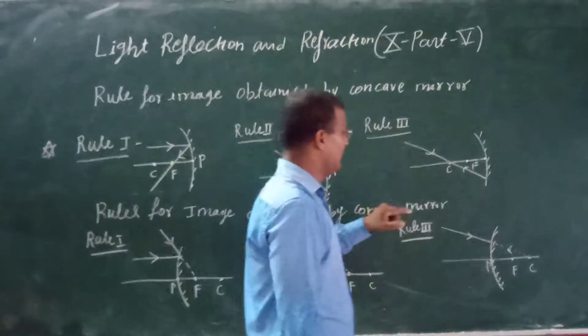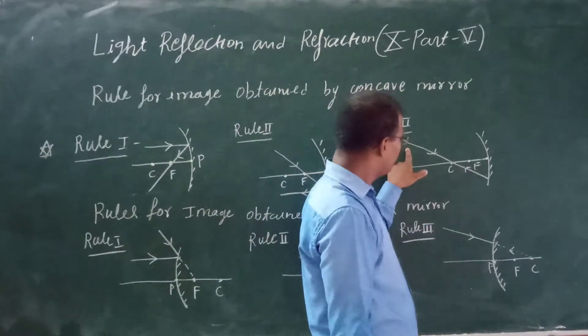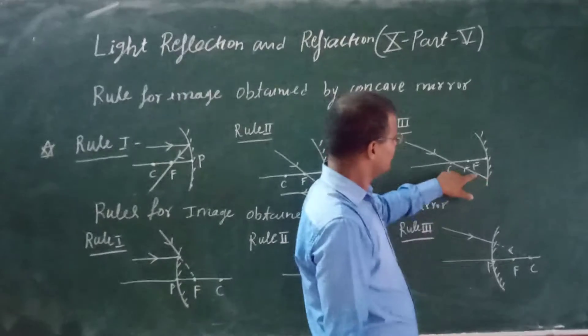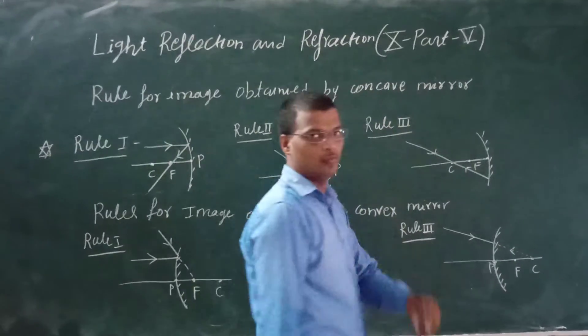The third rule is that if the incident ray passes through the focus, it will become parallel to the principal axis after reflection.